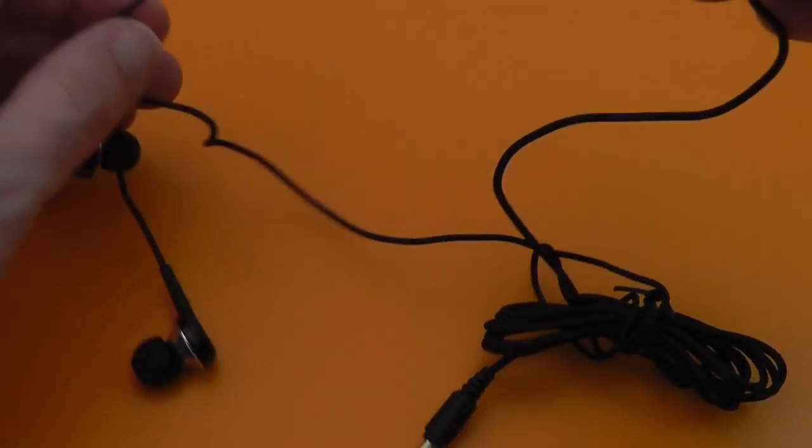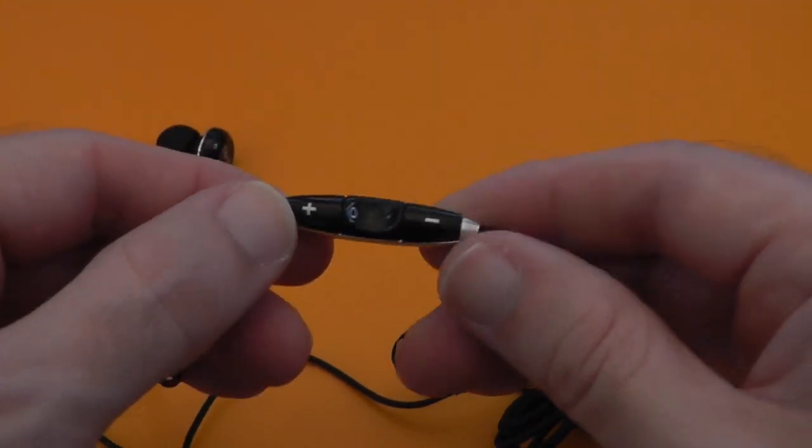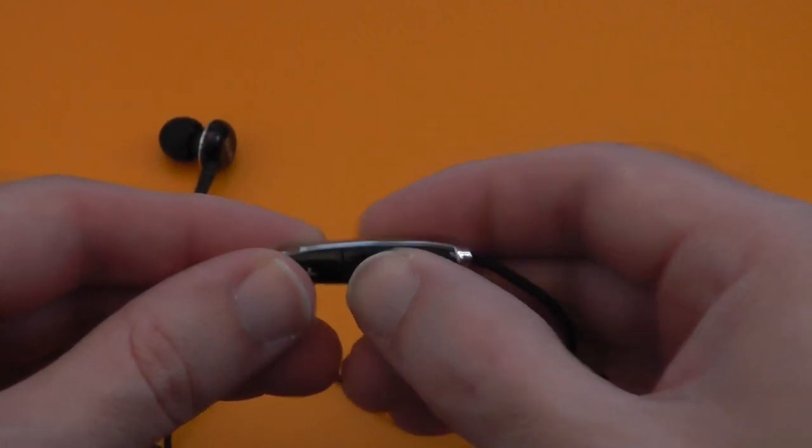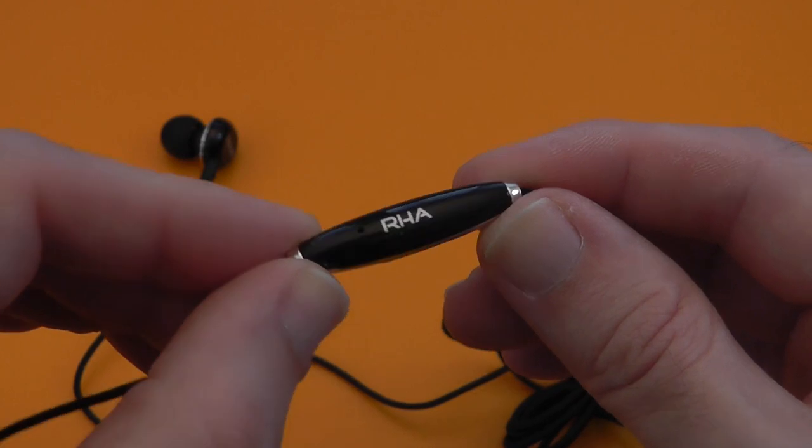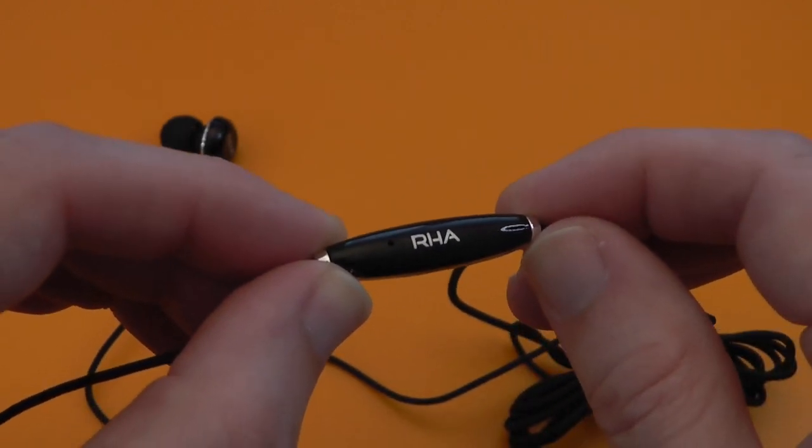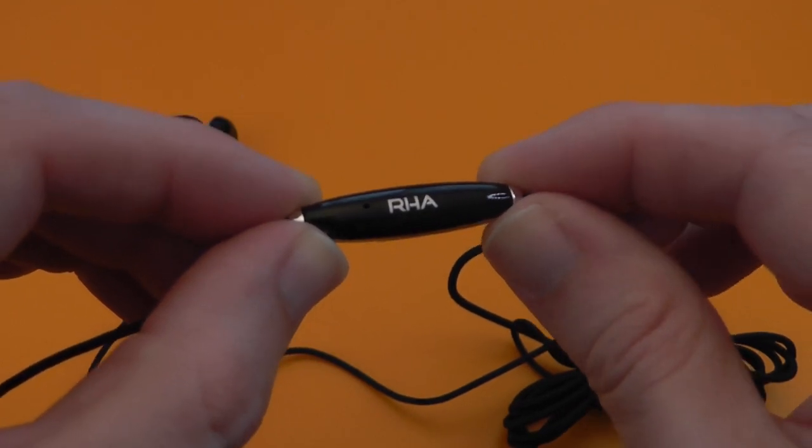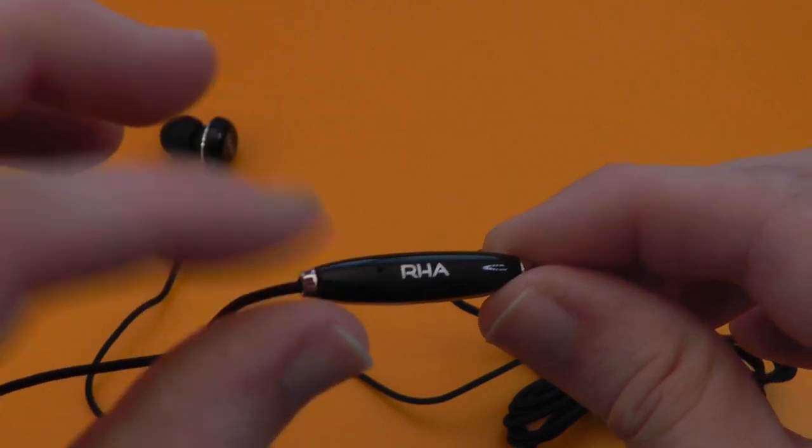And then along this line here we have got the inline control. Now we've got plus and minus. We've got push to talk in the middle. We've got a microphone around the back with the little RHA logo. Just by it. And the microphone pickup, very good quality. Used this to make a couple of phone calls and the recipient said the voice was very clear indeed. So good quality microphone.